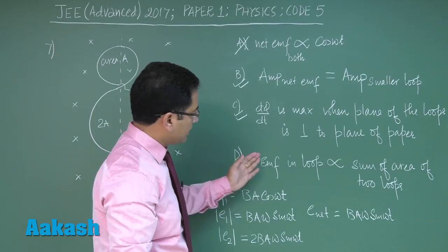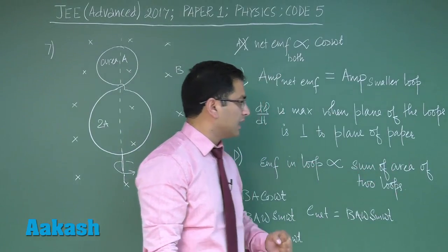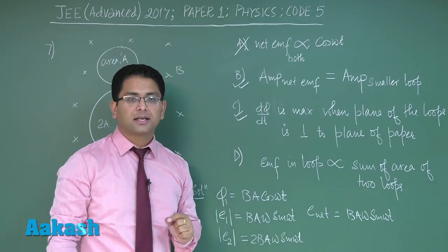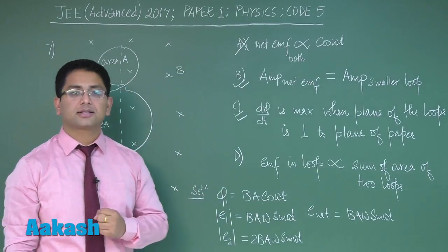Option D: EMF in the loop is directly proportional to sum of area of two loops - that would be incorrect because it has to be the difference. The direction part is opposite.